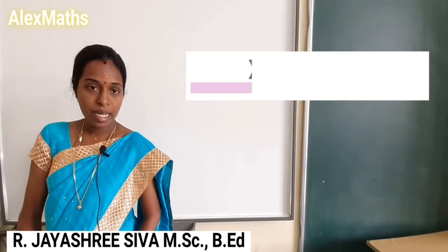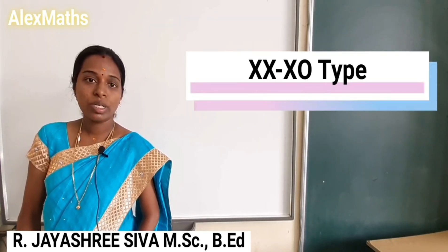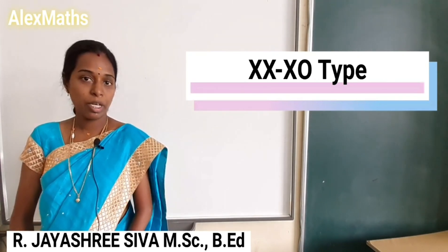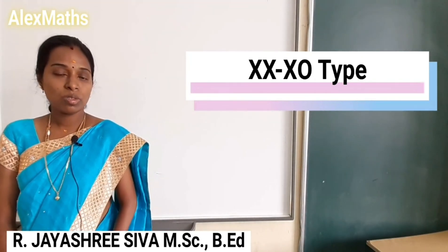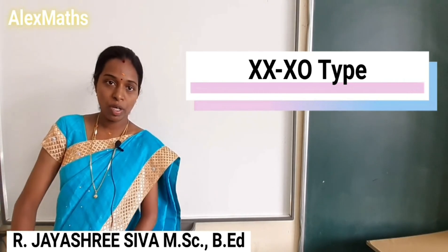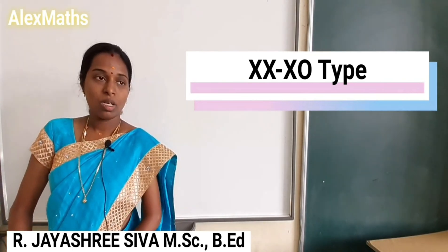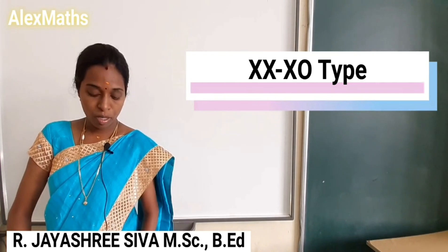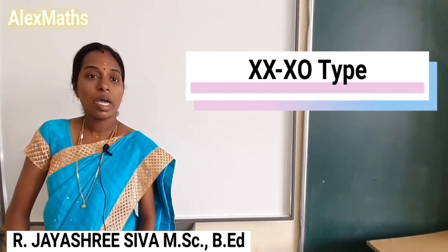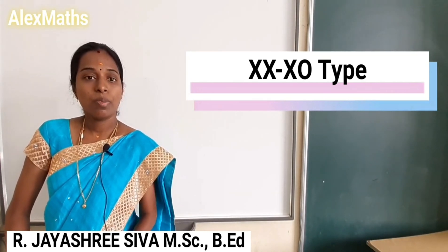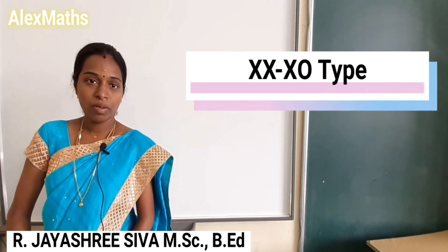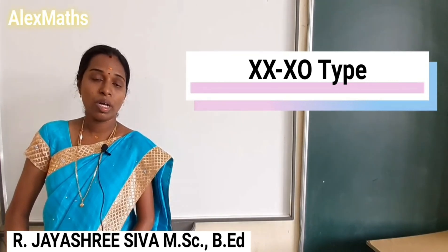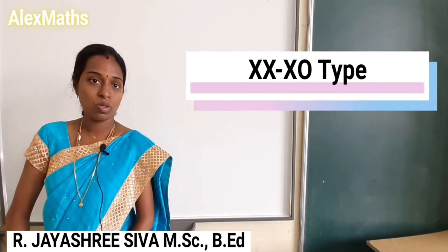There is also the XXXO type. Normally, sex chromosomes determine the sex of human beings. XX is female and XY is male. XX is female and XY is male, while the XXXO or XO type is also covered.